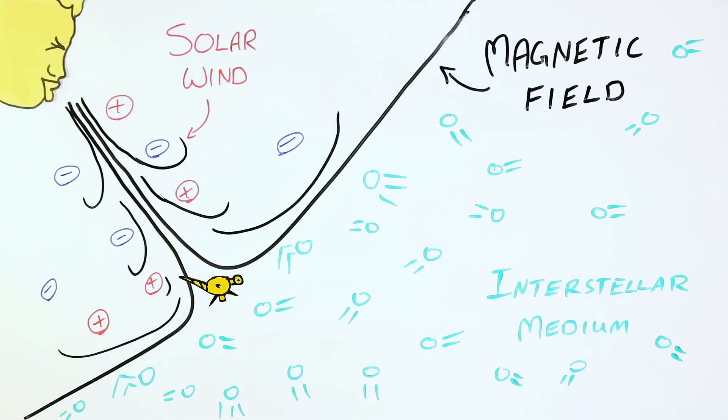So when Voyager 1 started to detect particles coming from elsewhere in the galaxy, rather than particles carried by the solar wind, it signaled that it was reaching the edge of the Sun's influence.